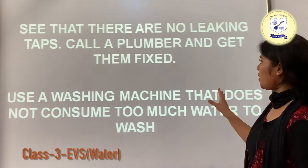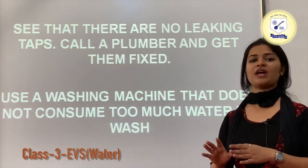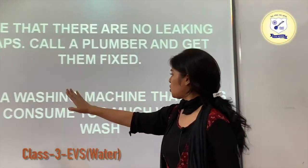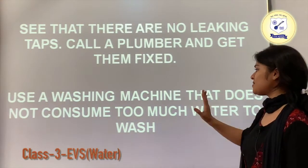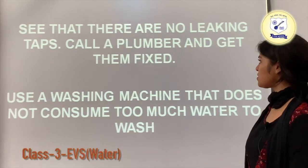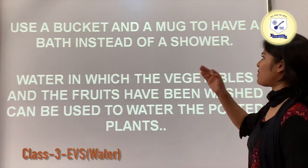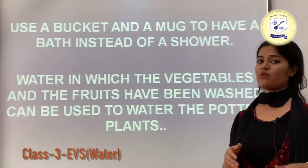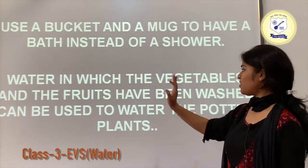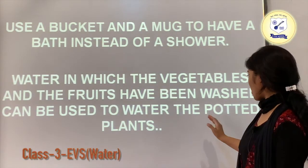Check that there are no leaking taps — call a plumber and get them fixed on time. Use a washing machine that does not consume too much water. Use a bucket and mug to have a bath instead of a shower to save water. Water in which vegetables and fruits have been washed can be used to water potted plants.